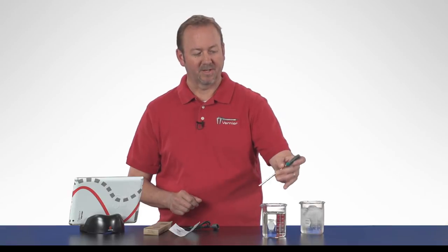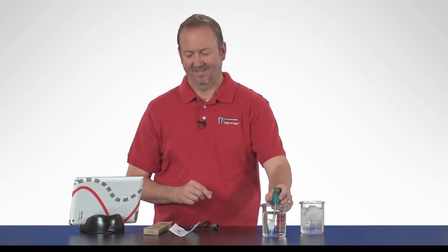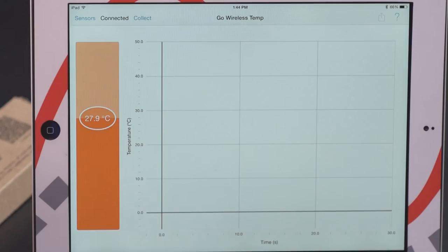We have a beaker of hot water and a beaker of cold water here, just to give us a nice temperature difference and some interesting numbers. So we'll stick the temperature sensor into the hot one. You can see the numbers rising, the temperature going up.